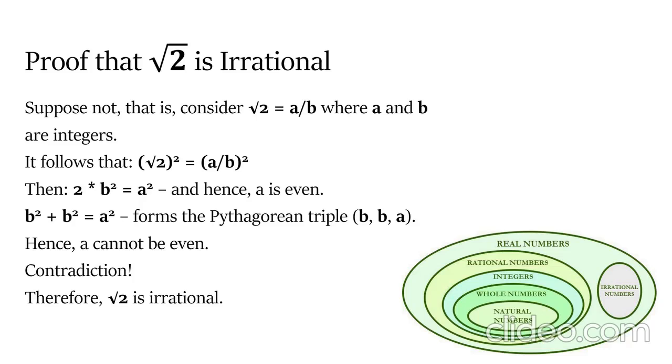So we have a is even and a is not even. Therefore, the original supposition that the square root of 2 is rational is false, and the square root of 2 is irrational. And this concludes the proof. Quod erat demonstrandum.